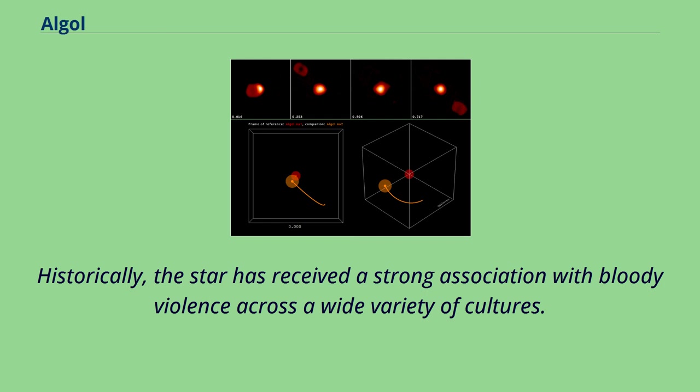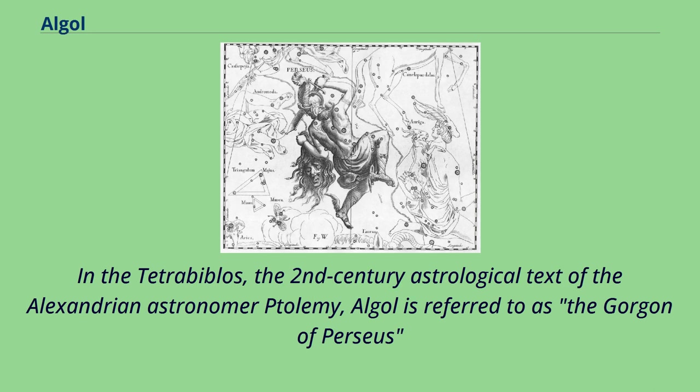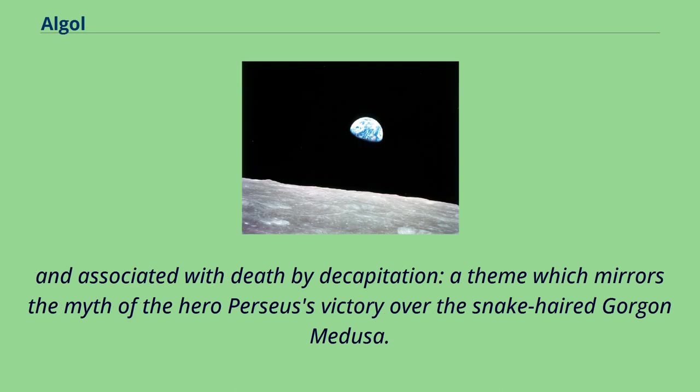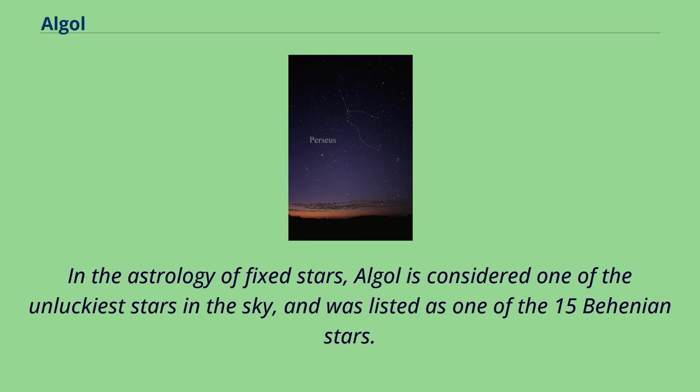Historically, the star has received a strong association with bloody violence across a wide variety of cultures. In the Tetrabiblos, the 2nd century astrological text of the Alexandrian astronomer Ptolemy, Algol is referred to as the Gorgon of Perseus and associated with death by decapitation, a theme which mirrors the myth of the hero Perseus's victory over the snake-haired Gorgon Medusa. In the astrology of fixed stars, Algol is considered one of the unluckiest stars in the sky, and was listed as one of the 15 Behenian stars.